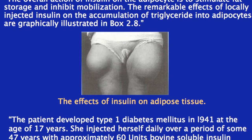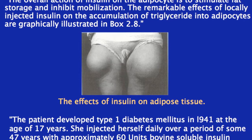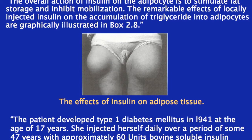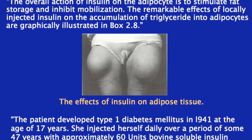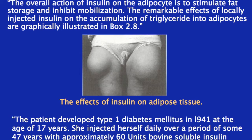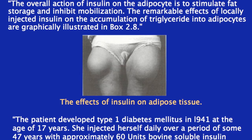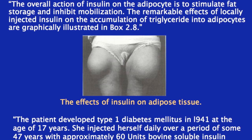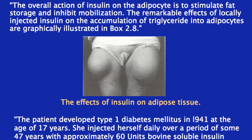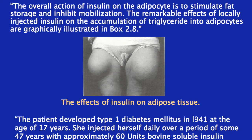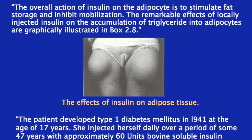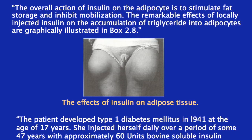The ultimate depiction of insulin as a fattening hormone comes from a 2001 textbook called Endocrinology and Integrated Approach. The overall action of insulin on the adipocyte is to stimulate fat storage and inhibit mobilization. The textbook illustrates the remarkable effects of locally injected insulin with a photo of a woman who developed Type 1 diabetes in 1941 at age 17, injected herself daily for 47 years with 60 units of bovine insulin using only two injection sites on her thighs, and developed huge masses of fat there. It had nothing to do with how much she ate or exercised. Insulin makes fat cells accumulate fat.